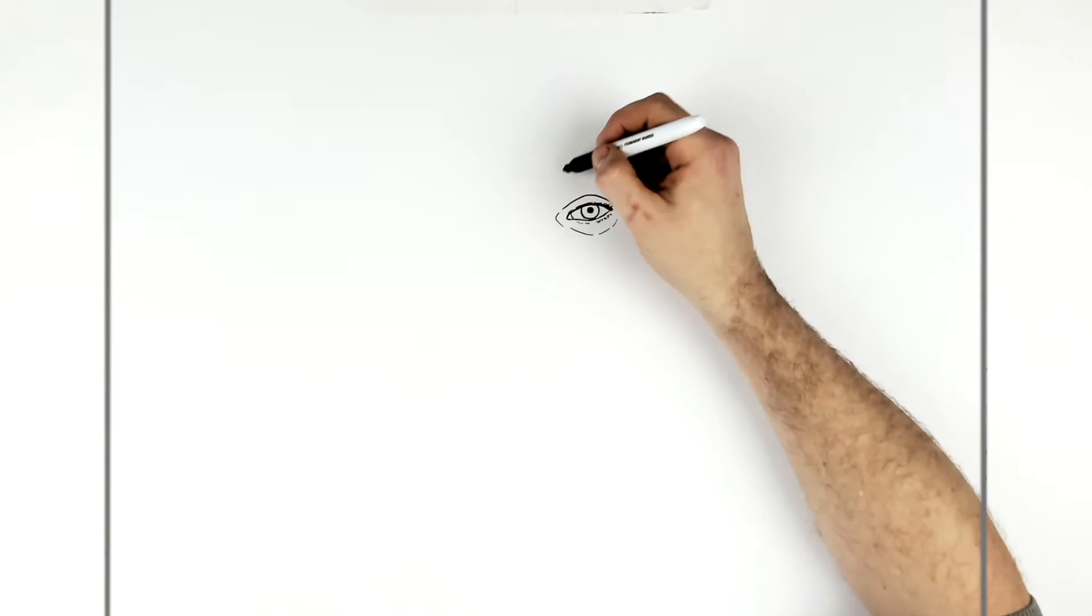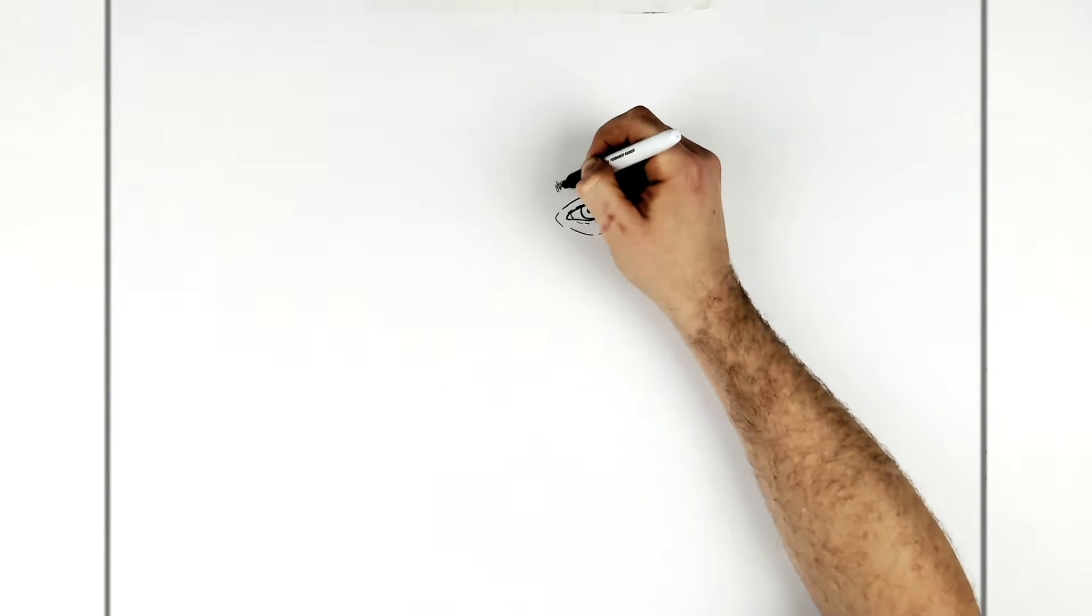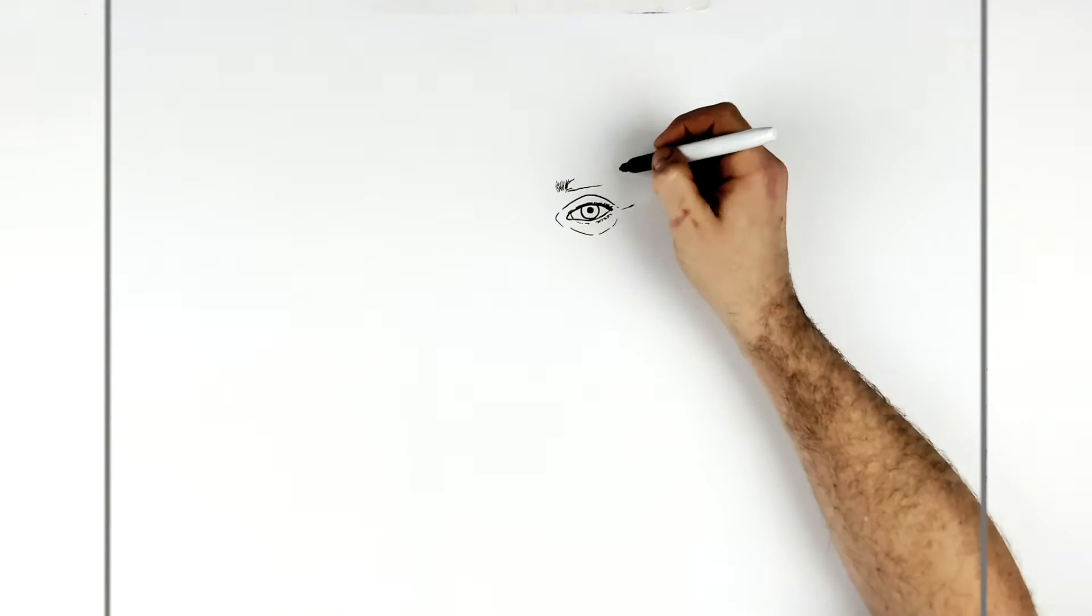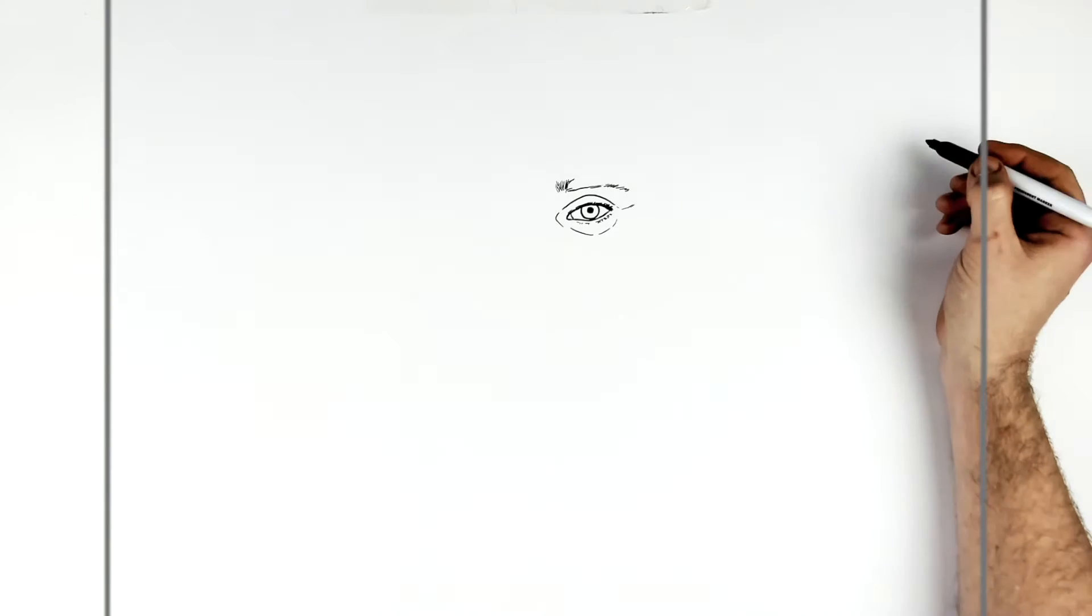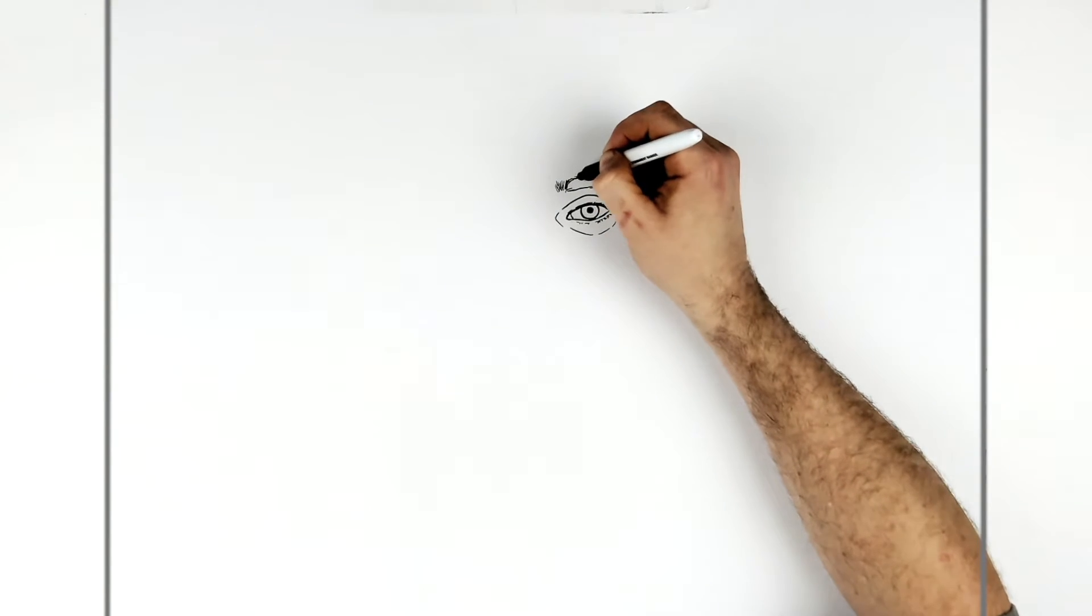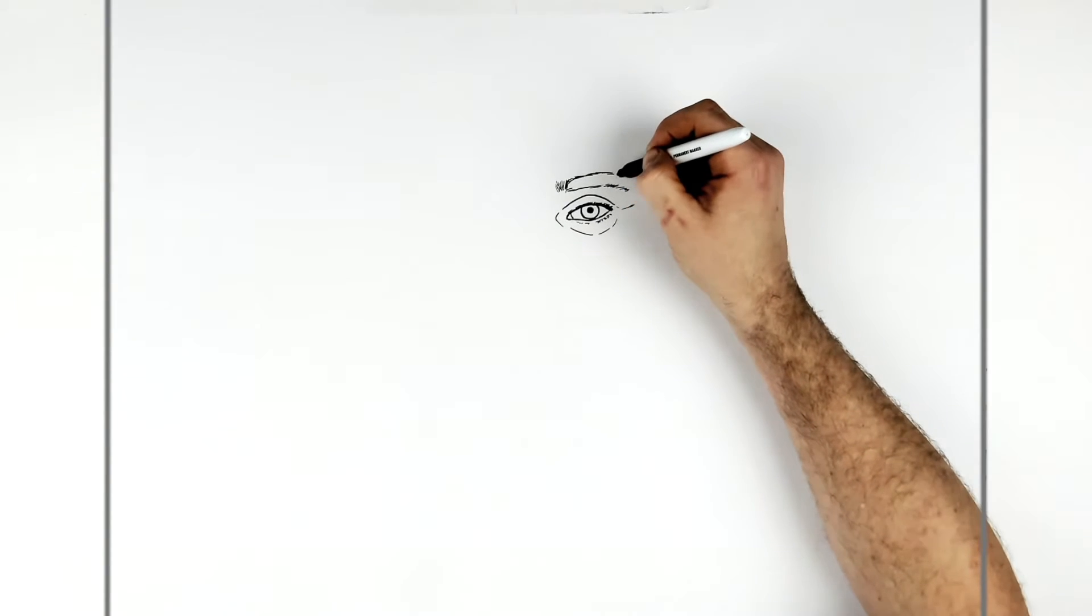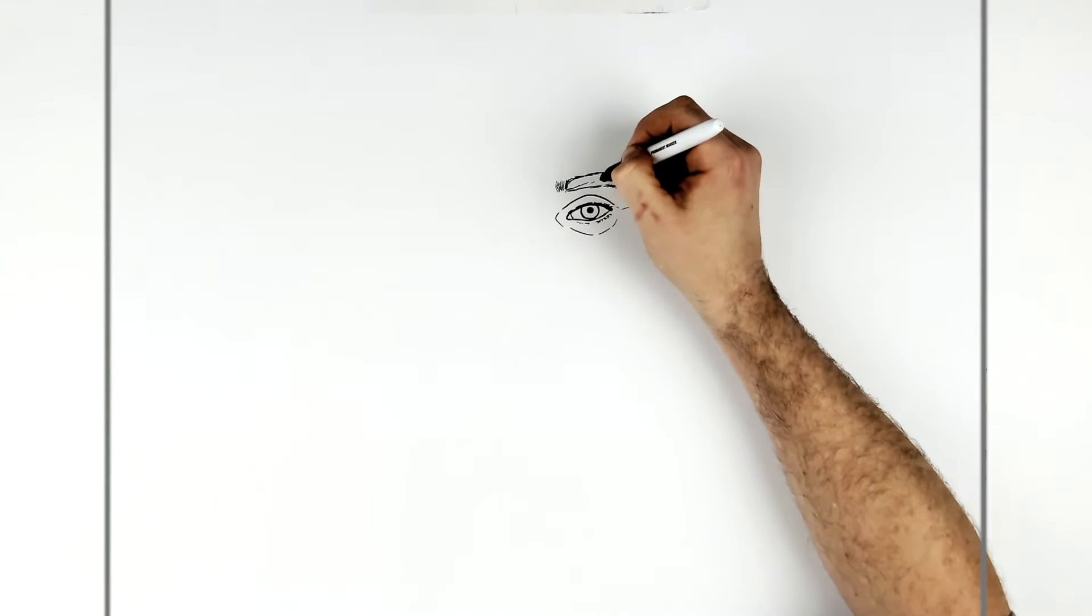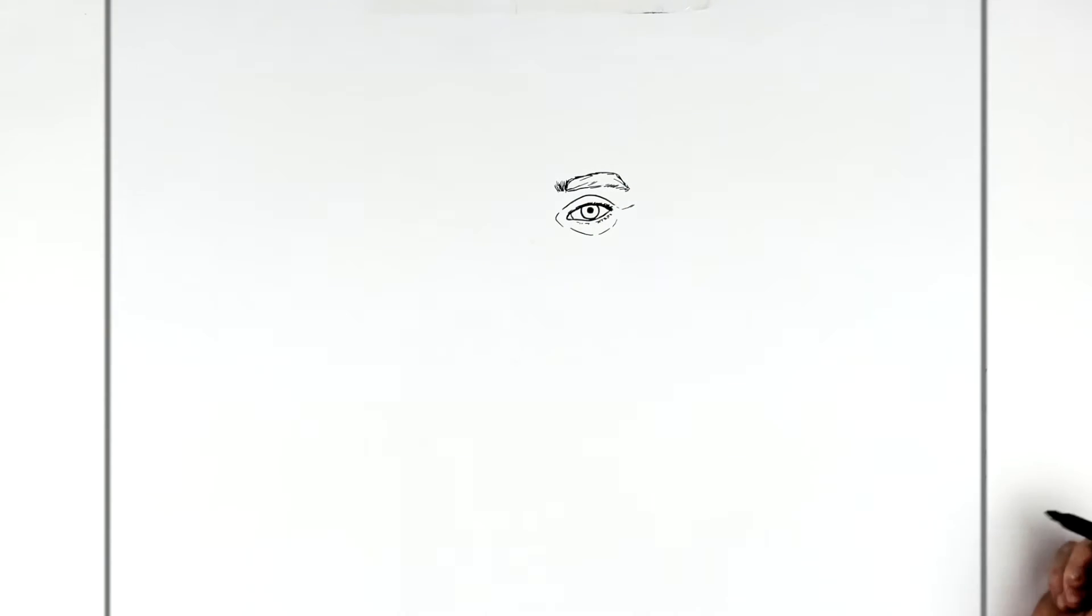So eyebrows. Not that big, but they're like a little bit hairy at the front. So we just add some hair, and then the eyebrow starts to go like this way. Down there. And then I'll go across pretty square, and down here.